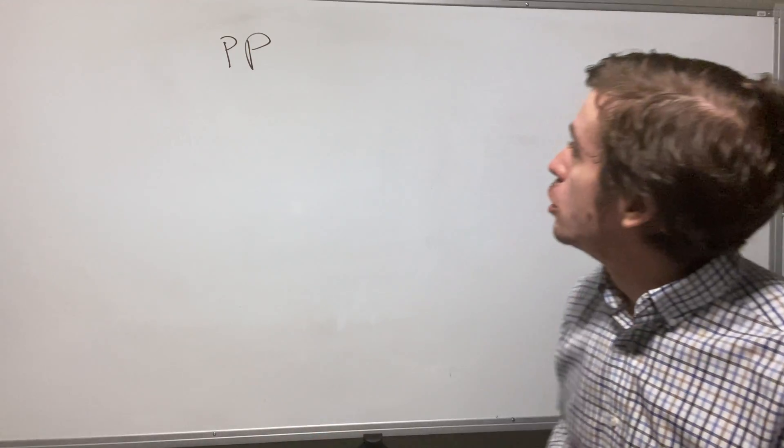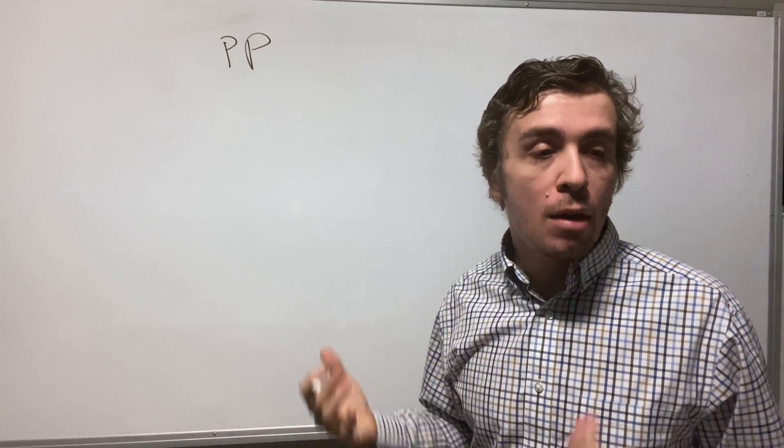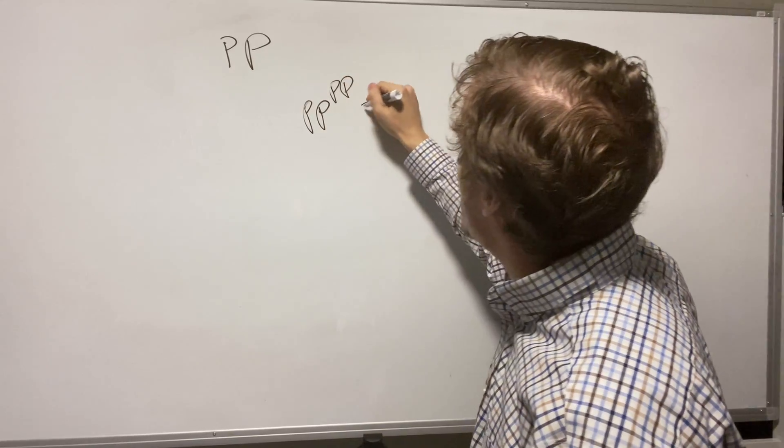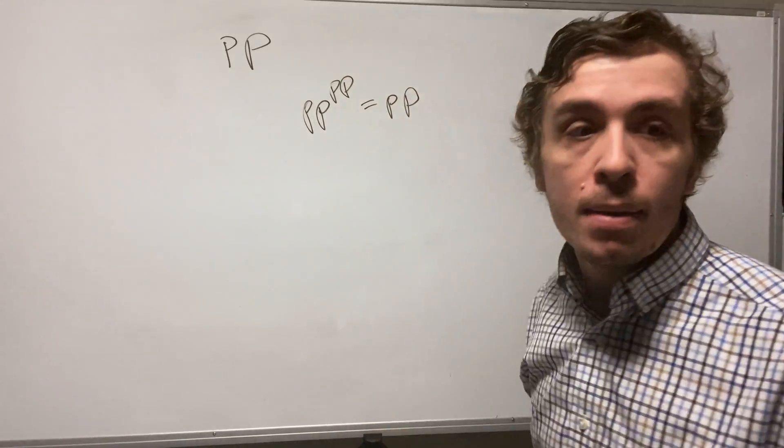So the things that we can show about PP is that it's low for itself, which means that if you take PP to the power of PP, therefore that's equal to PP. Is every computer scientist sexually frustrated?